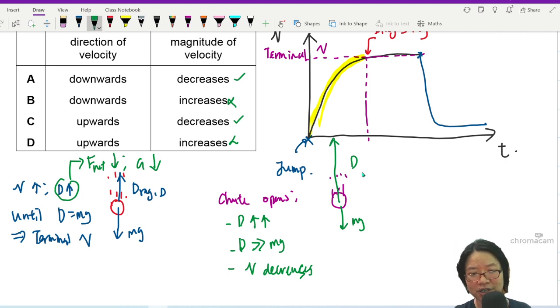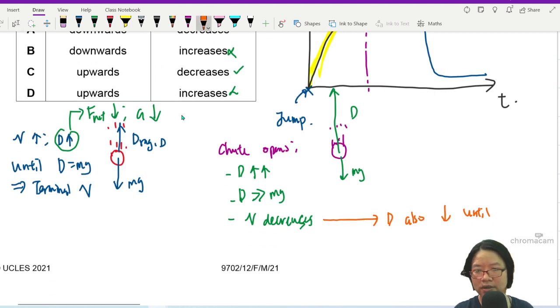Your drag force will increase and your velocity decreases, but what happens when your velocity decreases? Drag also decreases until D equals mg all over again. This is the second terminal velocity.